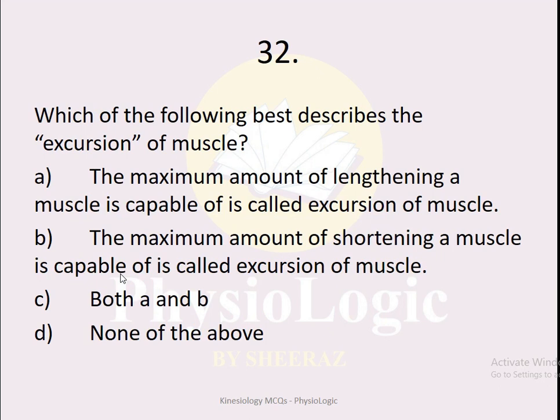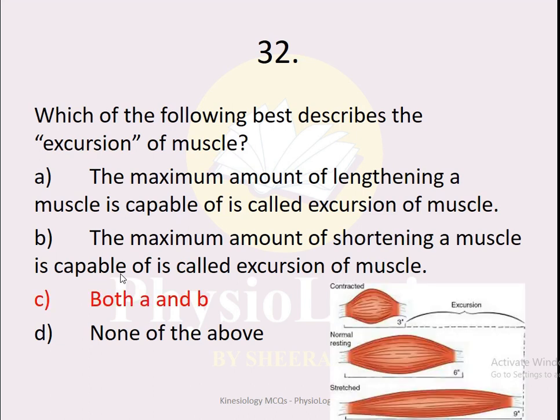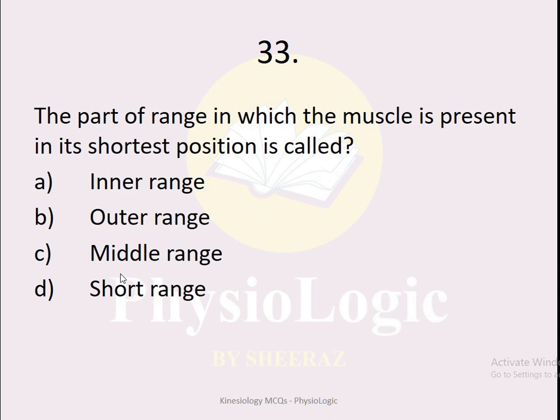MCQ number 32: Which of the following best describes the excursion of a muscle? Option A — the maximum amount of lengthening a muscle is capable of; option B — the maximum amount of shortening a muscle is capable of; option C — both A and B; option D — none of the above. The correct option is option C, both A and B. The maximum amount a muscle can go in both lengthening and shortening is known as muscle excursion.